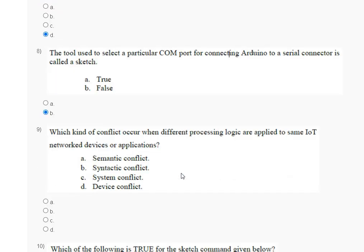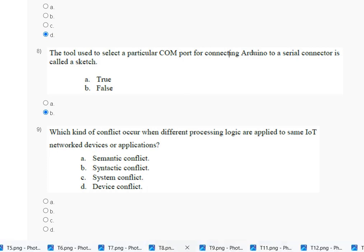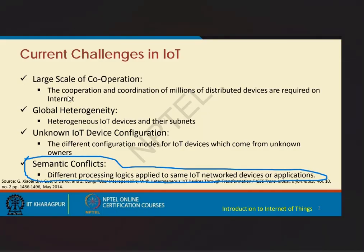Question number 9: which kind of conflict occurs when different processing logic is applied to the same IoT network device — application conflict, semantic conflict, system and device conflict? A semantic conflict is when different processing logic is applied to the same IoT network device application. So the correct answer for question number 9 is option number A.